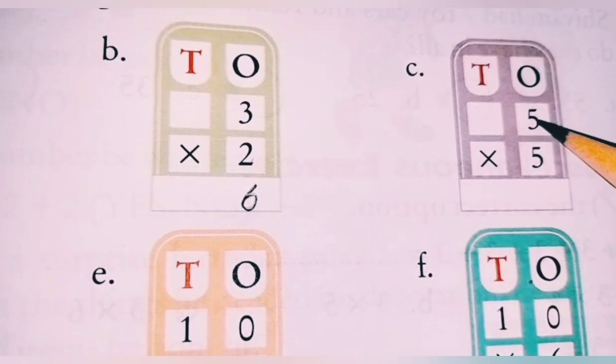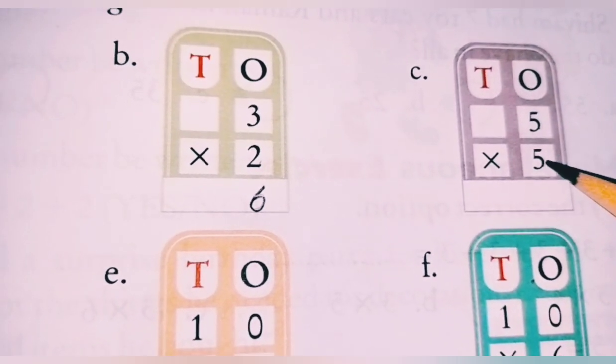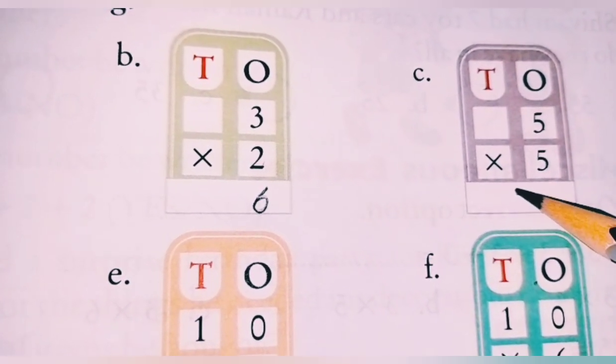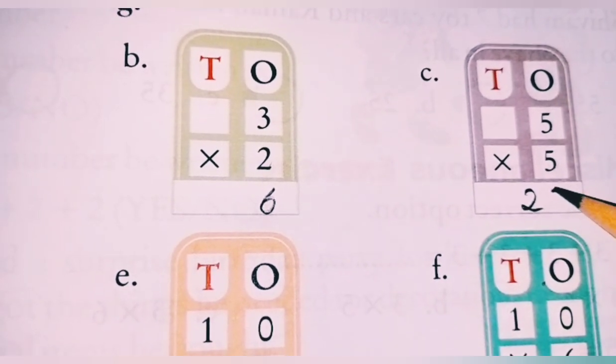Two times five... five times five is twenty-five, okay?